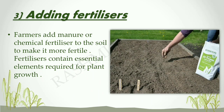Seeds require nutrients for proper growth. Nutrient-rich soil increases productivity. Fertilizers are added to the soil to make it rich in nutrients. Two types of fertilizers are used: manures and chemical fertilizers. Manures are natural fertilizers made from cow dung and dead and decaying plants and animals. Chemical fertilizers are man-made, like urea. Excess of fertilizers may harm the soil and the crop.